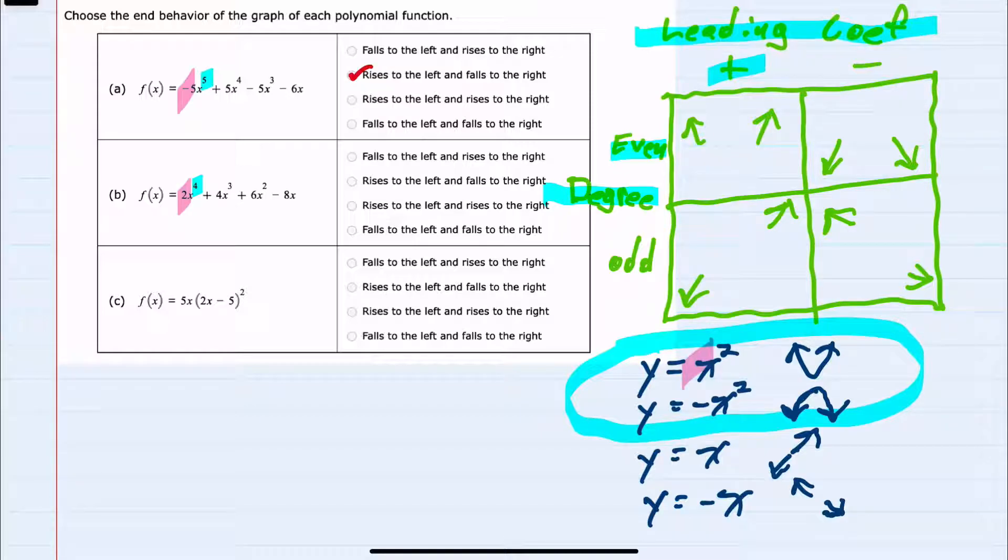it'll be like the top example here. Positive and even goes up to the left, up to the right, rising and rising.